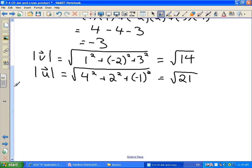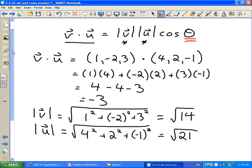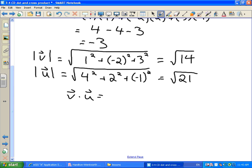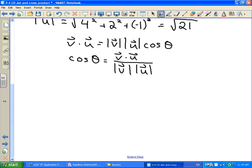All right, so let's put all this stuff together. We've got V dot U equals magnitude of V magnitude of U cosine theta. Let's rearrange this to solve for cos theta. So that's going to be V dot U divided by magnitude V and magnitude U, and sub in what we've calculated up above. Our dot product, V dot U, is negative 3. Our magnitudes were root 14 and root 21. And then we can just solve this thing for theta.